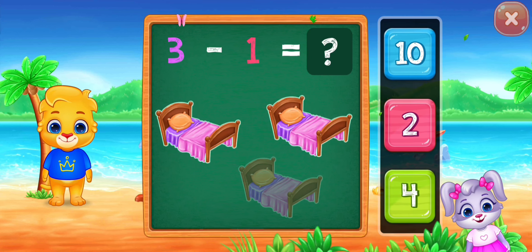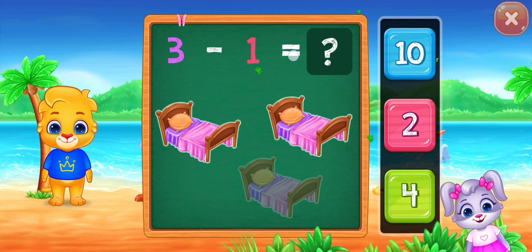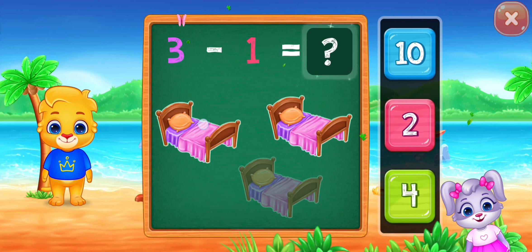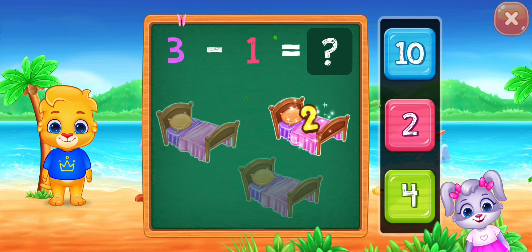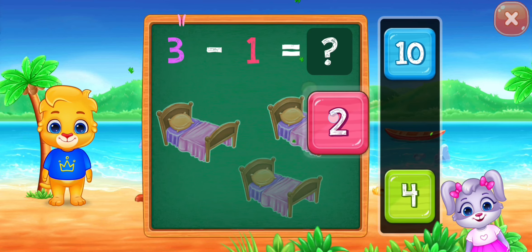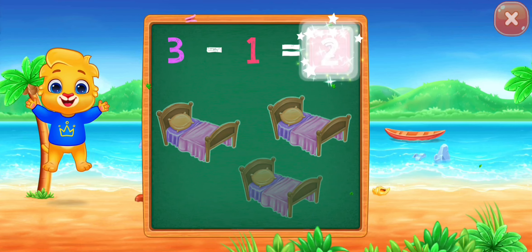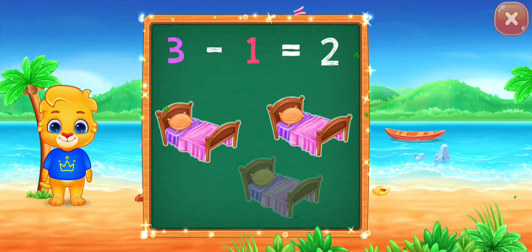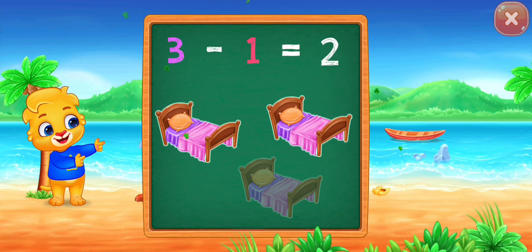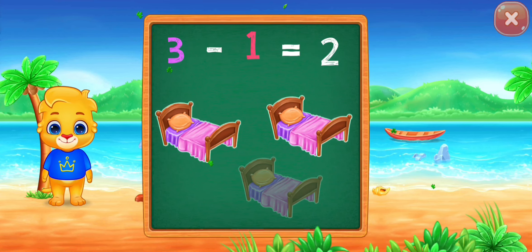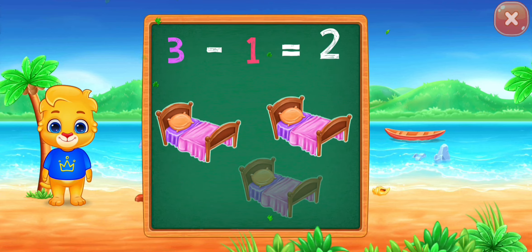Three minus one equals... one, two. Three minus one equals two.